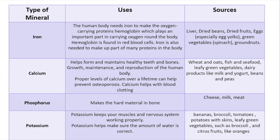Then we have potassium. Potassium keeps your muscle and nervous system working properly. Potassium also helps to make sure that the amount of water in the body is correct — we can think of potassium as a regulator. It is commonly found in bananas, broccoli, tomatoes, potatoes, green veggies, and other fruits.